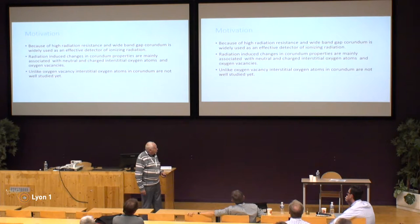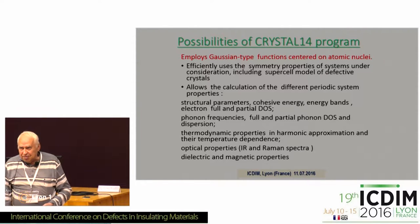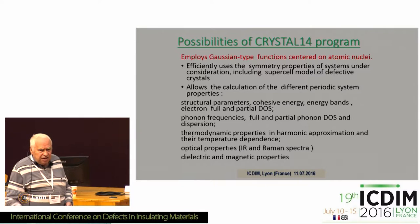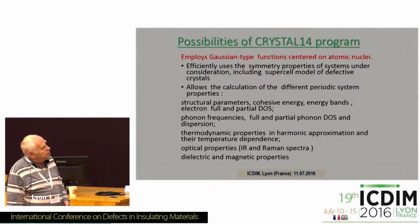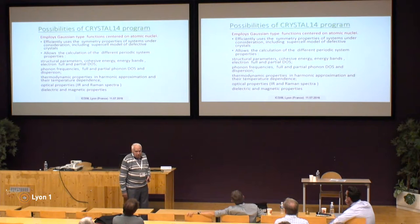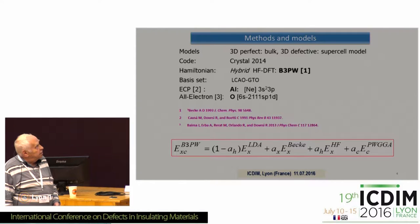The majority of people who make calculations in the world use plane wave programs — it was already mentioned today, VASP from Vienna. We prefer the Italian program CRYSTAL, because chemists never work with plane waves; they work with atomic bases. Therefore we use this code, which employs Gaussian-type functions centered on atomic nuclei. This is very efficient: it allows not only calculating different properties of crystalline solids, but also systems with sub-periodic properties — surfaces with 2D periodicity and nanotubes with 1D periodicity. In plane wave calculations, it is necessary to introduce artificial periodicity.